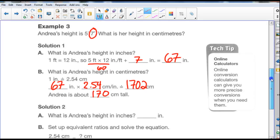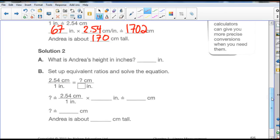Solution number two, what is Andrea's height in inches? Well, we know it's 67 inches. Set up an equivalent ratio and solve the equation. So 2.54 centimeters is to 1 inch, as blank centimeters is to 67. So how do we do that? Well, we can cross multiply.